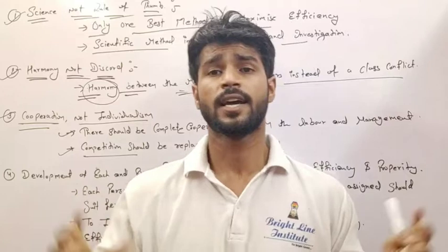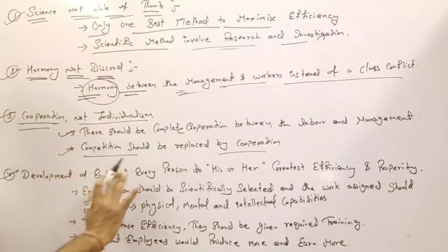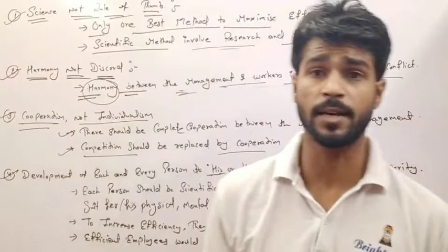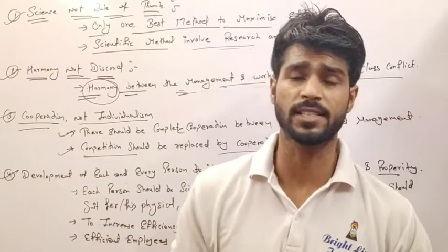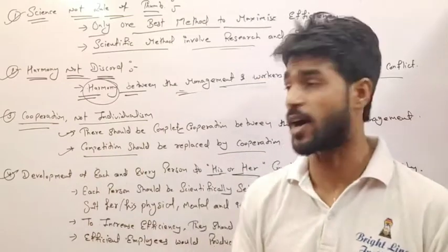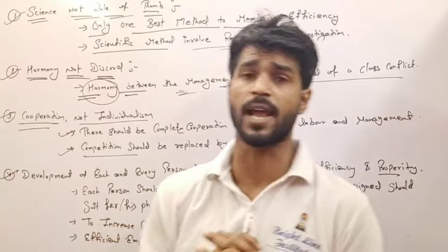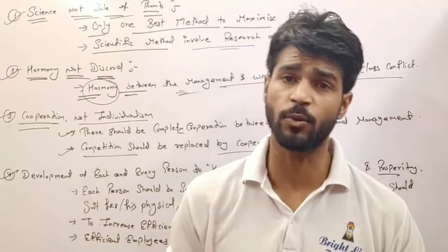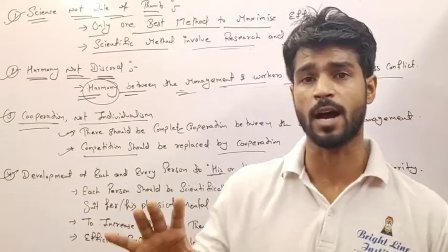Not competition but cooperation — not individualism. The fourth point is development of each and every person to his or her greatest efficiency and prosperity. Every employee has their own capabilities. For example, I can make a thousand units in two days but I can use only 600 units, so I don't fully utilize those capabilities.